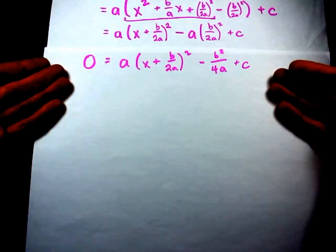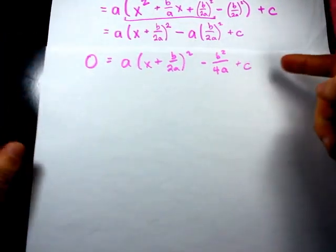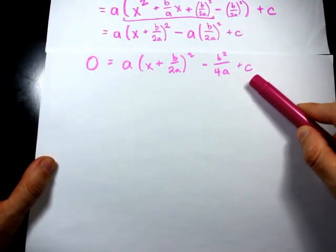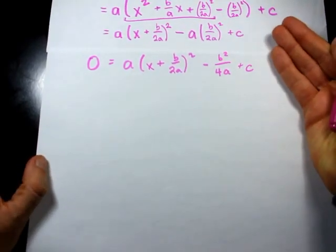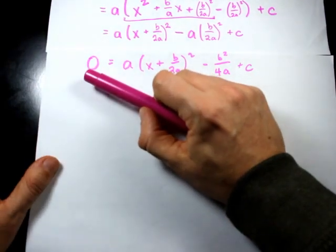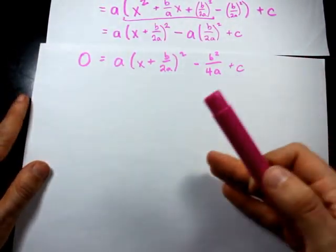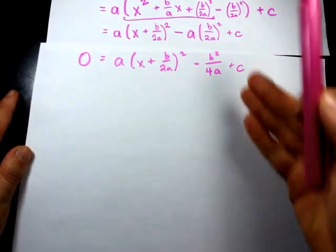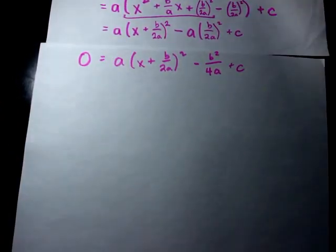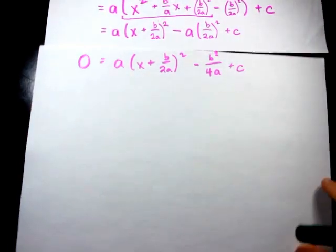All right. So what we have here is an equation. The solutions of this satisfy the quadratic equation by definition, because we've set y equal to zero, and the quadratic equation helps us solve for x-intercepts. We only have one x here, and so we just need to isolate for it. The rest of this is algebra.